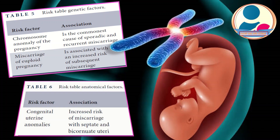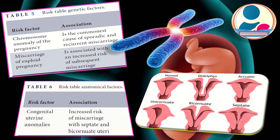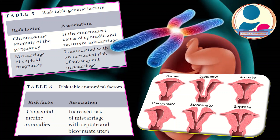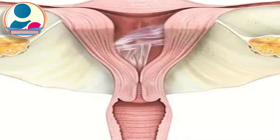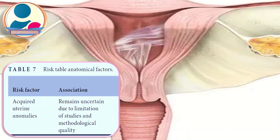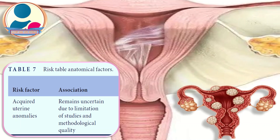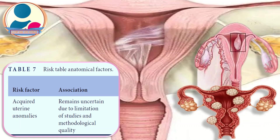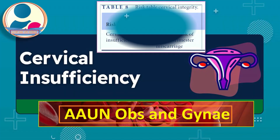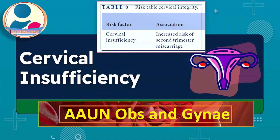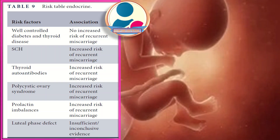Regarding congenital uterine anomalies, there is increased risk with septate and bicornuate uterus. The association of acquired uterine anomalies with miscarriage remains uncertain due to limitations in study quality. Cervical insufficiency carries increased risk of second trimester miscarriage.